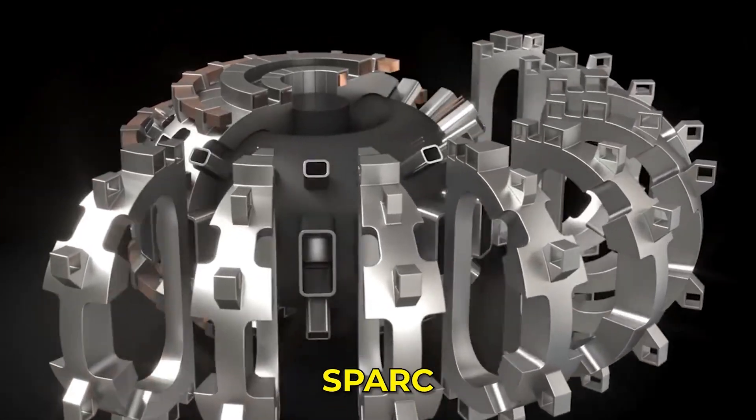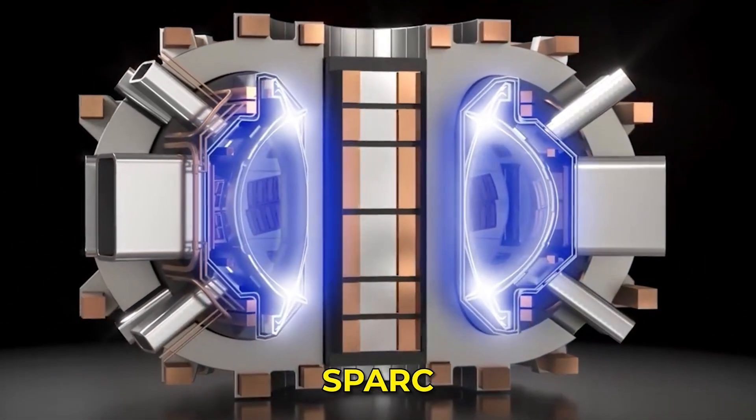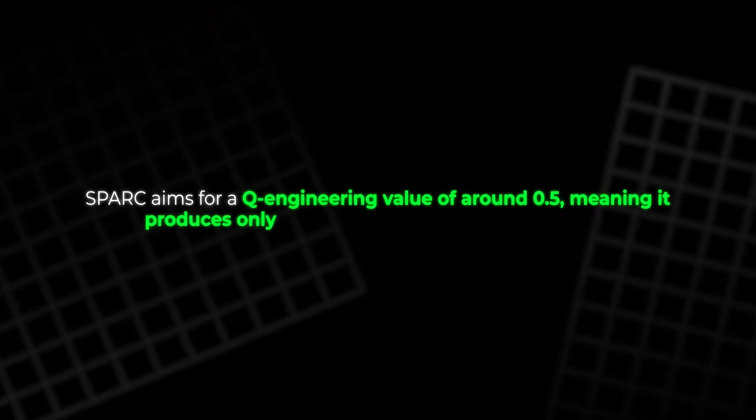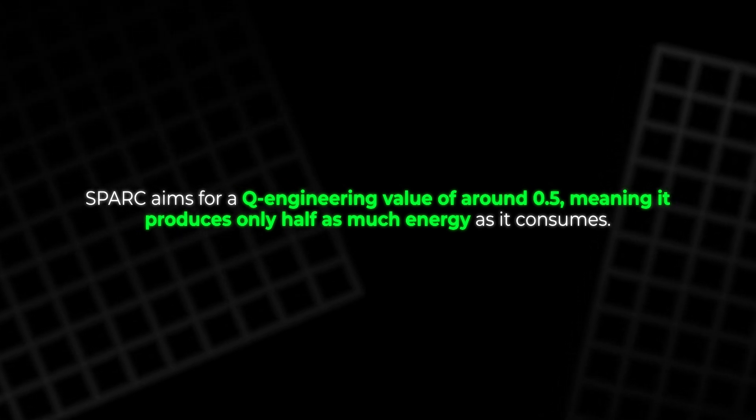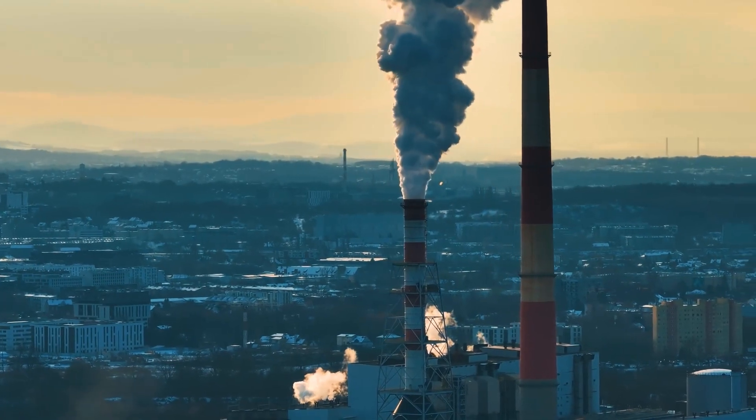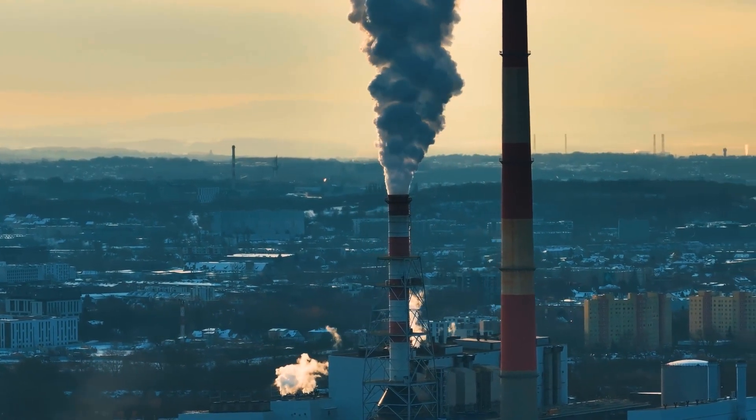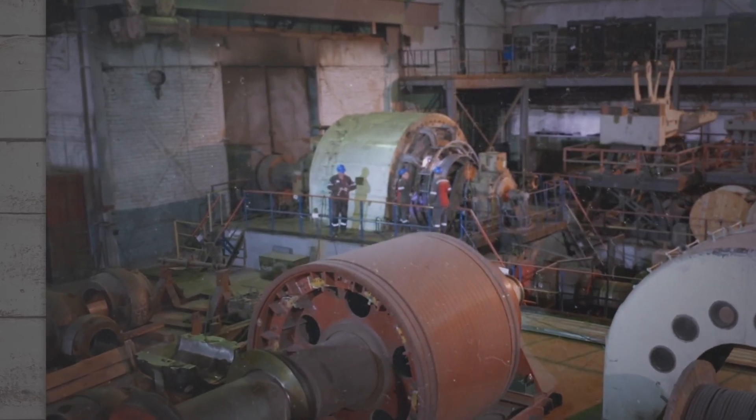One leading example is Spark, a compact fusion project developed by Commonwealth Fusion Systems in collaboration with MIT. Spark aims for a Q value of around 0.5, meaning it produces only half as much energy as it consumes. To compete with conventional power plants, that value would need to reach at least 20. Achieving that requires major advances in materials and magnet technology.